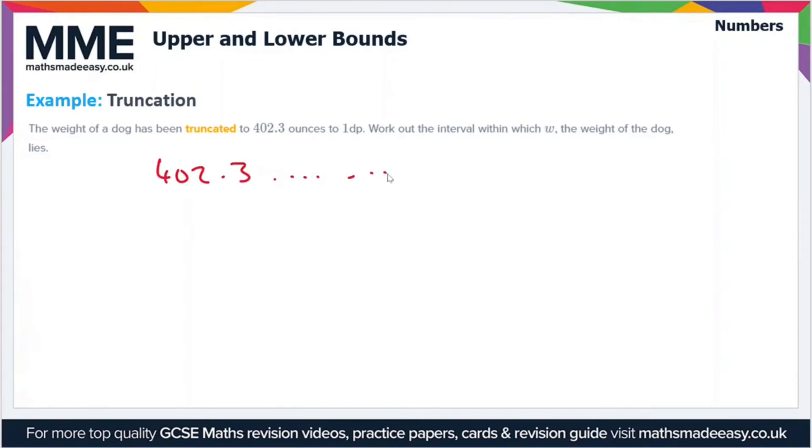It's 402.3 and it's been truncated to one decimal place, so this could be 402.3 anything and then they've just cut off after the three and ignored everything else. We've truncated to one decimal place to get this value, so the smallest value this could be is just 402.3.